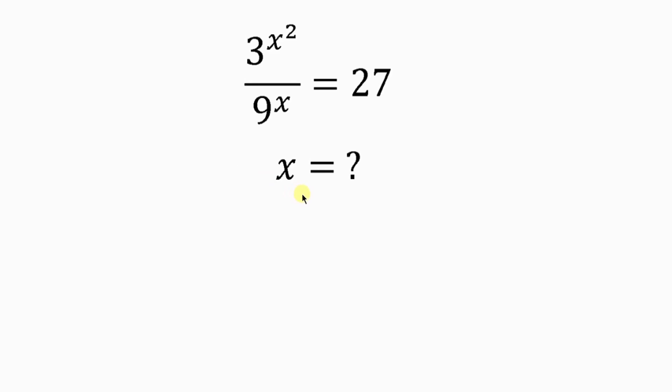Let's solve for the values of x, given that 3 to the x squared, all over 9 to the x, is equal to 27.